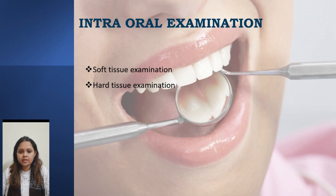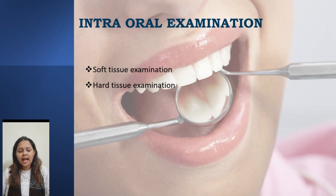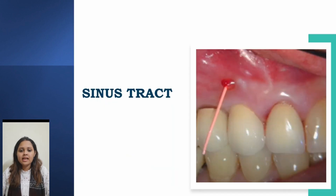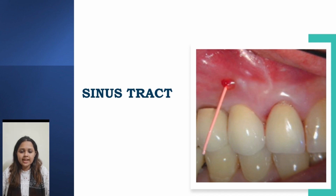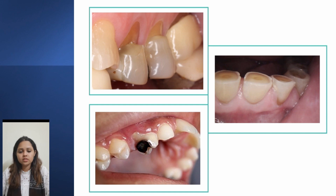Moving on to the intraoral soft and hard tissue examination, we need to inspect the palate, tongue, gingiva, and buccal mucosa for any abnormalities like inflammation, pockets, swelling, or growths, and document these findings. This also includes the presence of a draining sinus tract, which if present, we can trace with a gutta-percha point and take a radiograph. Many times we will notice that the tracing ends on a tooth further away from the site of drainage.